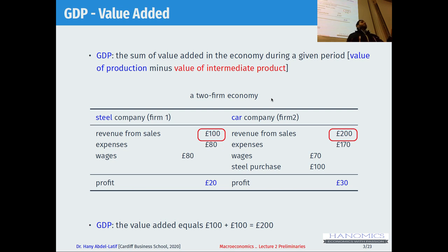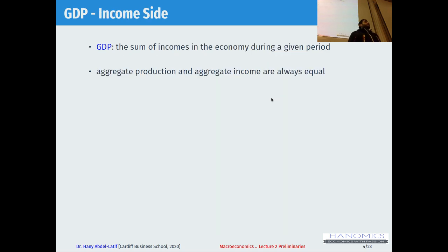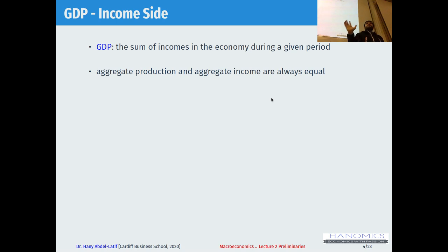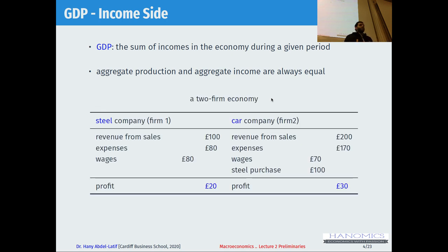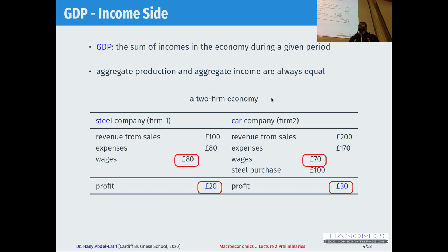A third way to calculate GDP is from the income side. If you sum or add up all incomes in an economy, that gives you the GDP and should be the same number. In our example: firm one paid £80 wages, firm two paid £70 wages — that's £150. Plus profits of £20 plus £30, that's £50. Adding these together gives us £200 — exactly the same number.